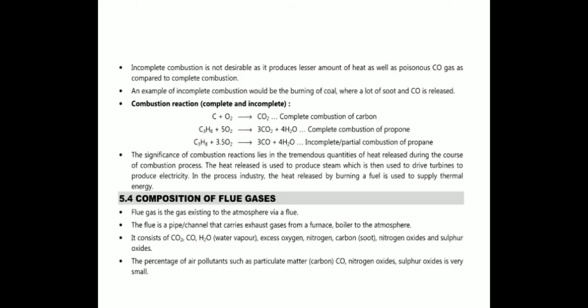Flue gas is the gas exhausted to the atmosphere via a flue — a pipe or channel that carries exhaust gases from the furnace or boiler to the atmosphere. It consists of CO2, CO, water, excess oxygen, nitrogen, carbon, nitrous oxide, and sulfur oxide. The percentage of air pollutants such as particulate matter, CO, nitrogen oxides, sulfur dioxide, and sulfur oxide is very small.